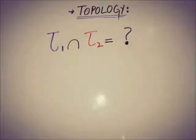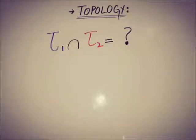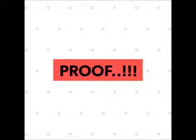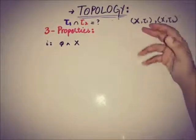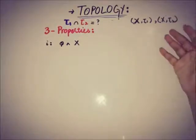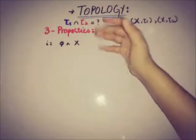Hello everyone. In this video we will see that if we have two topologies of the same set and we want to take the intersection of the topologies, is it a topology or not? We need a proof. The situation is we have one topological space X with τ1 and another X with τ2, and we have to figure out whether τ1 ∩ τ2 is a topology or not.